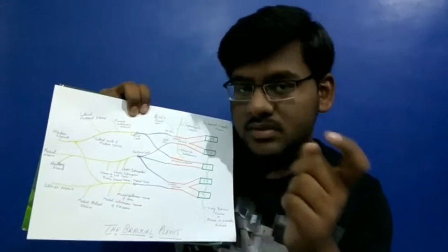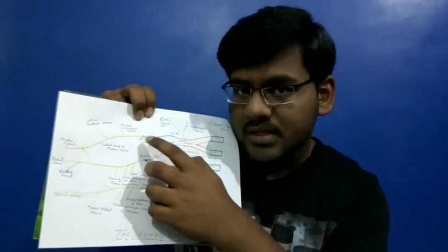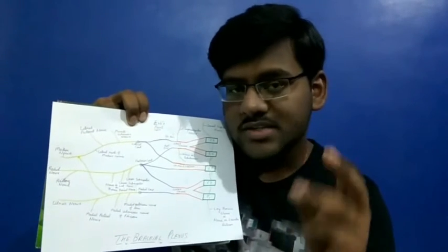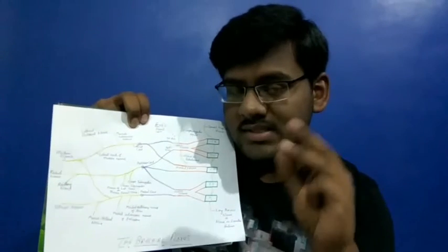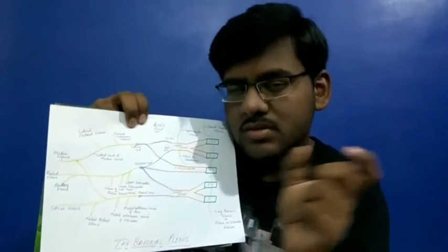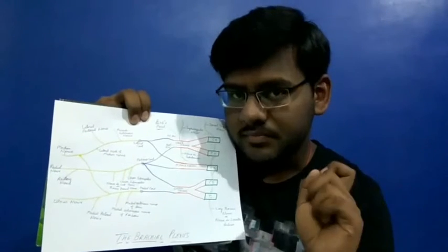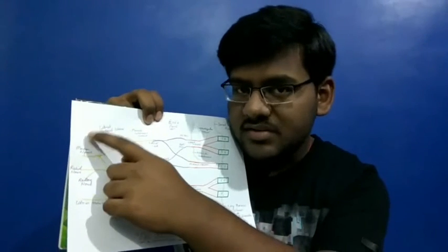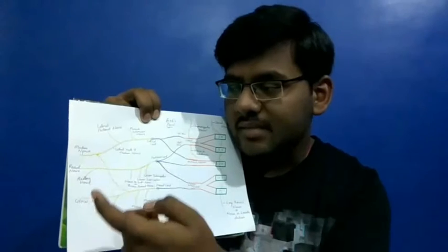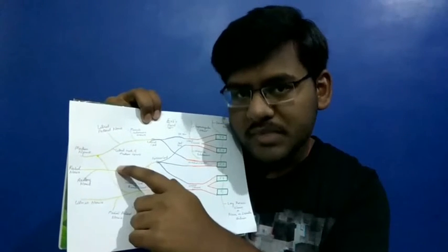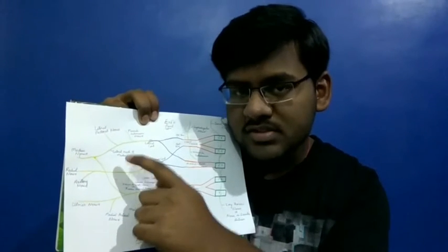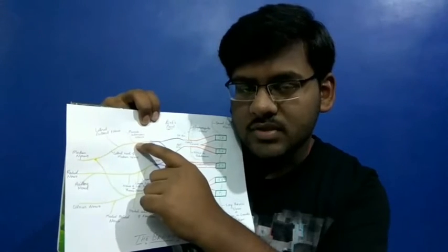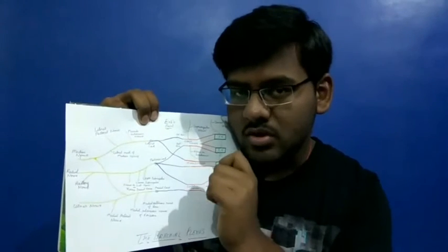The lateral cord gives rise to three branches. Using the mnemonic LLM: the first L means lateral pectoral nerve, the second L means lateral root of median nerve — this is very important — and M means musculocutaneous nerve. These are the three branches of the lateral cord.